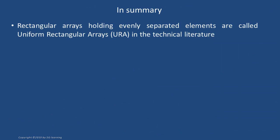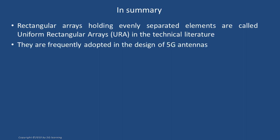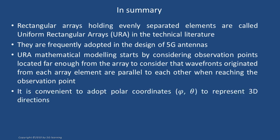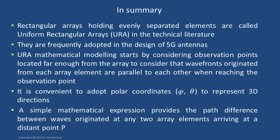In summary, rectangular arrays holding evenly separated elements are called uniform rectangular arrays (URA) in the technical literature. They are frequently adopted in 5G antenna design. URA mathematical modeling considers observation points far enough from the array so that wavefronts from each element are approximately parallel when reaching the observation point. A simple mathematical expression provides the path difference between waves from any two array elements arriving at a distant point P.